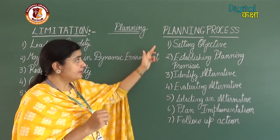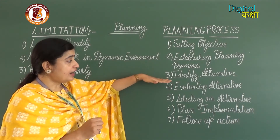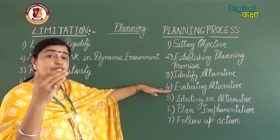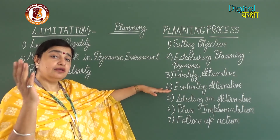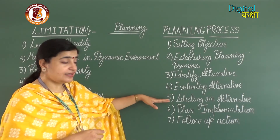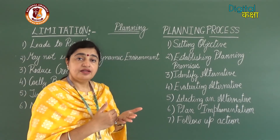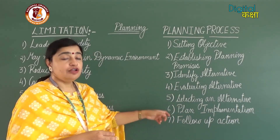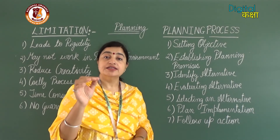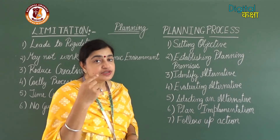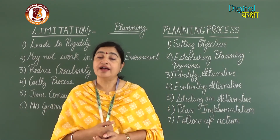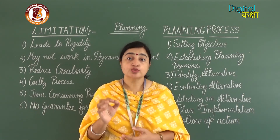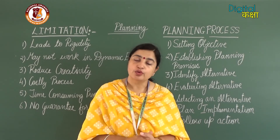So the planning process consists of: setting the objective, establishing premises, identifying alternatives, evaluating alternatives, selecting the best alternative based on feasibility and profitability, implementing the plan, and follow-up action to check results and switch plans if needed. In this video we studied the limitations and the planning process. In the next video we are going to understand types of plans, which is very important for case studies. Thank you for watching.